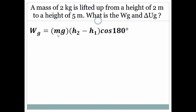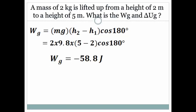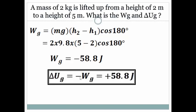Work done by gravity will be given by this formula. So we substitute the values and simplify it. Work done by gravity will be equal to minus 58.8 joules. By definition, change in potential energy is negative of work done. So that will be equal to plus 58.8 joules.